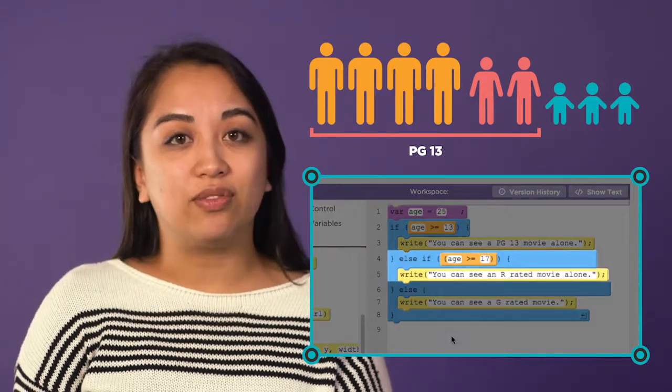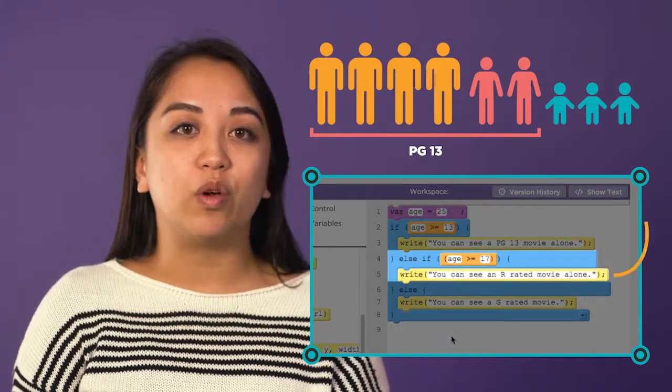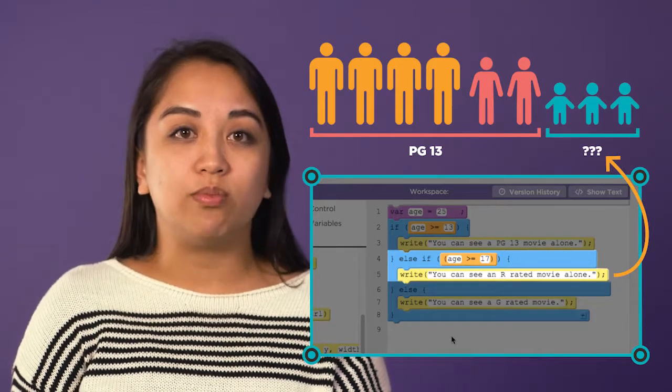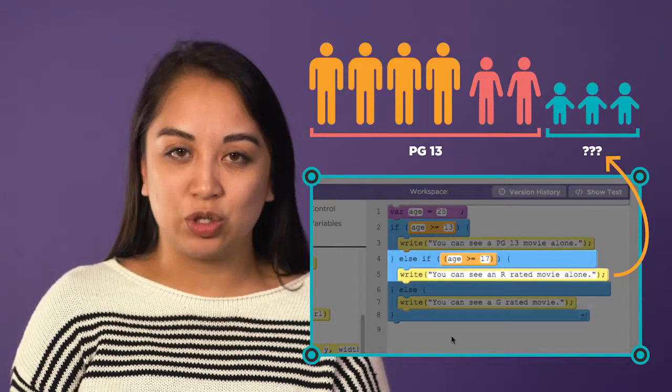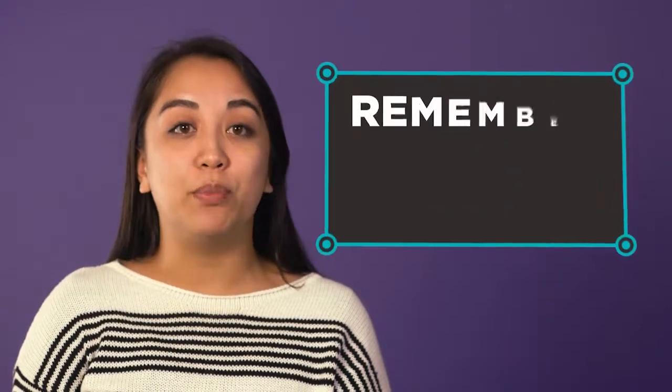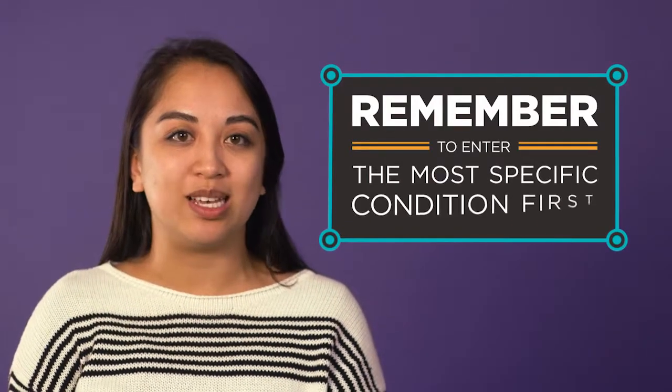And with the next else if line, the computer would be looking for people 17 or older in the remaining group. This code misses the adults because they were true in that first condition. This won't work. The computer checks the conditions from top to bottom, so it is important to enter the most specific condition first.